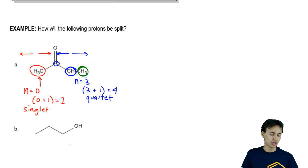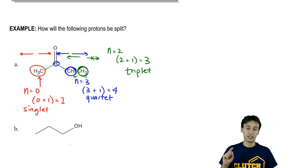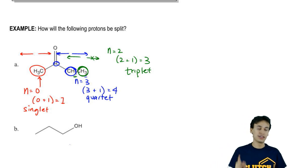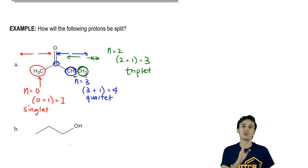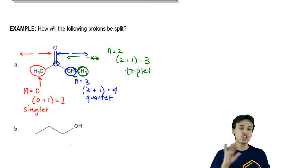Now let's look at green. Green is over here. So if I go to the right, nothing. If I go to the left, how many protons do I have? Two. So that means that for green, n is equal to 2. So that means according to n plus 1, it would be 2 plus 1 equals 3, which would be what we call a triplet. So that means that here I have a singlet, a quartet, and a triplet. And that's what we mean by splitting. Every proton has its own unique shape based on the number of protons it's next to.